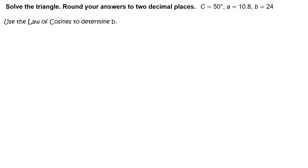First, use the law of cosines to determine the length of side c. Write: the length of side c squared equals the length of side a squared plus the length of side b squared minus 2 times the length of side a times the length of side b times cosine of the measure of angle C.